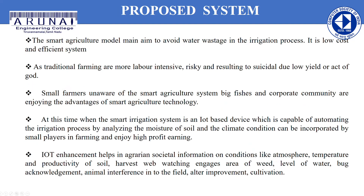In the proposed system, there is no need to monitor the field physically. We can do it through an IoT page. We can control the watering system both manually and automatically. Based on the moisture sensor, we can run the automatic watering system. Through the DHT11, we can monitor the temperature remotely. Through the NodeMCU, we can get every update instantly from the IoT webpage.